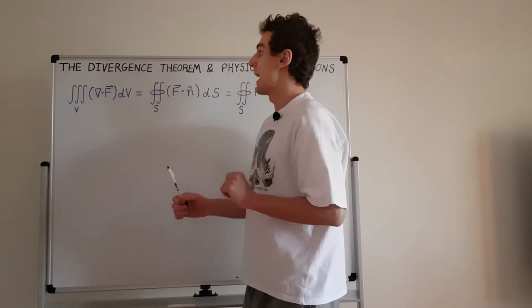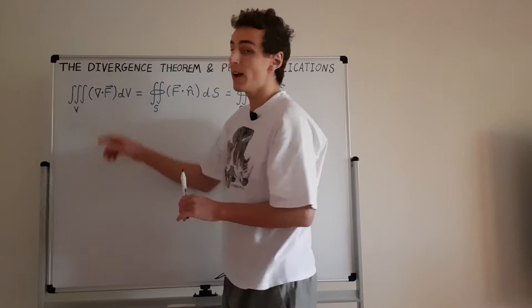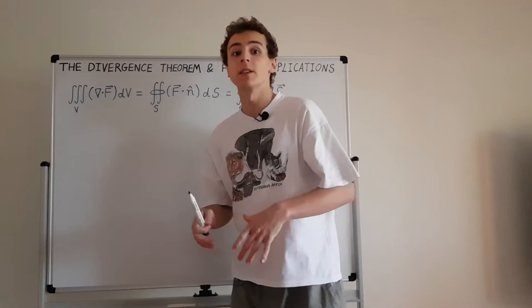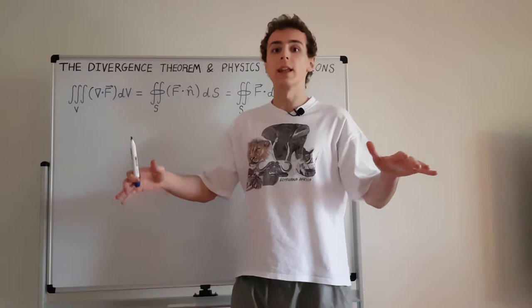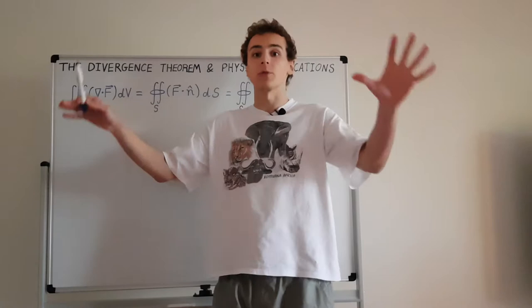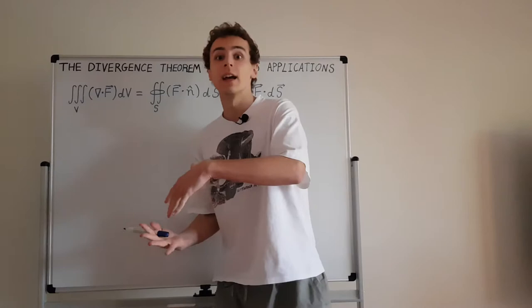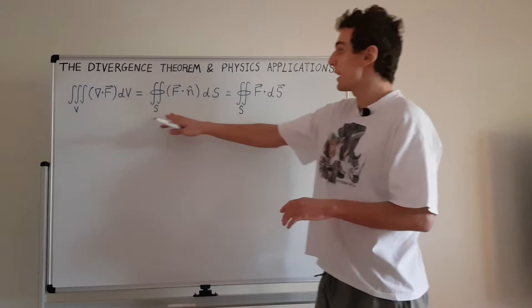You need three values to parameterize a volume, and that's how you compute a volume integral. The integrand is the divergence of a vector field. F is a vector field — denoted with an arrow — meaning every single point in space is assigned a magnitude and a direction, like little arrows sitting in three-dimensional space, each defining some kind of flow.